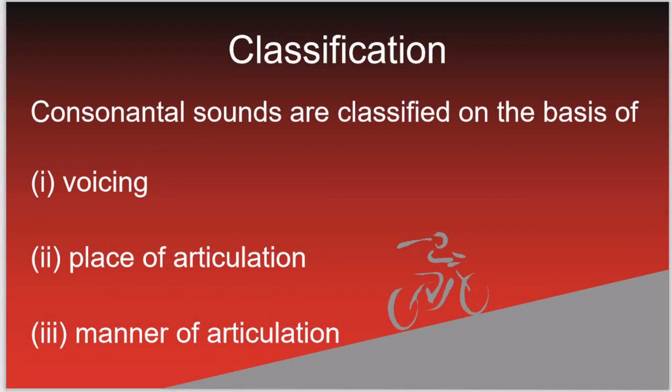Now we'll look at the classification of consonant sounds. Consonant sounds are classified on the basis of voicing — whether voiced or not — place of articulation, in which part of the mouth does the articulation happen, and the manner of articulation: how does the articulation happen, what are the strictures, what obstructions work to create that sound?